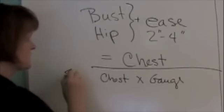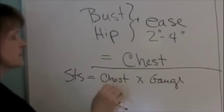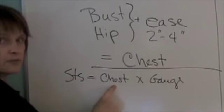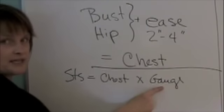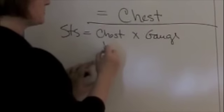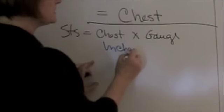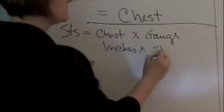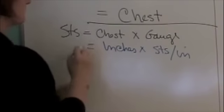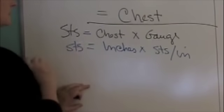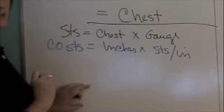Number of stitches equals length or width times stitch gauge. Our chest measurement will be in inches times stitches per inch and that will give us stitches. Number of stitches to cast on.